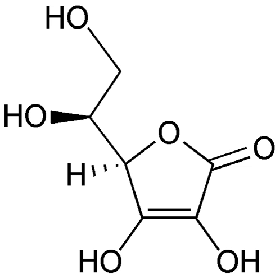Each half-reaction has a standard electrode potential, which is equal to the potential difference or voltage at equilibrium under standard conditions of an electrochemical cell in which the cathode reaction is the half-reaction considered, and the anode is a standard hydrogen electrode where hydrogen is oxidized. The electrode potential of each half-reaction is also known as its reduction potential E°red, or its potential when the half-reaction takes place at a cathode.